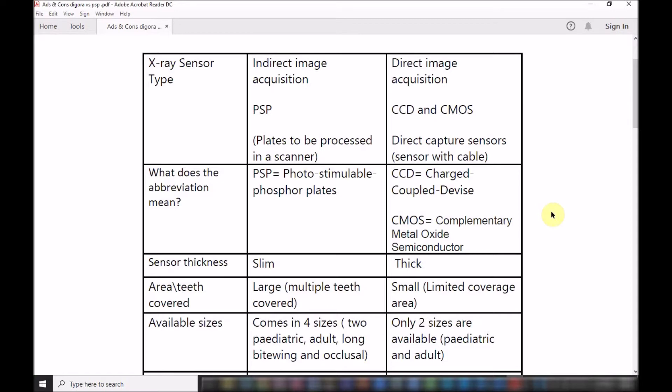CMOS abbreviates the complementary metal oxide semiconductor. The CCD is used in the bigger x-ray sensors and the OPG and the lateral surface, while the smaller ones tend to use the CMOS.